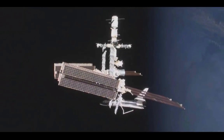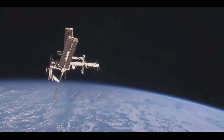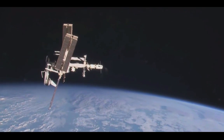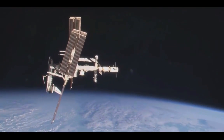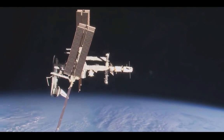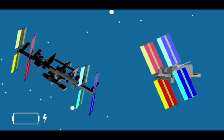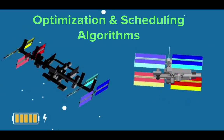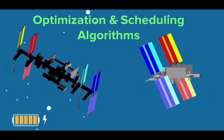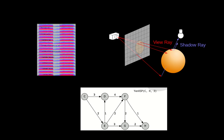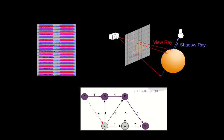How does NASA choose how to arrange the solar panels on the International Space Station, and when to rearrange them? With optimization and scheduling algorithms. Those algorithms are more complex than our everyday algorithms, like making a grilled cheese sandwich. But they boil down to the same thing: a set of steps to accomplish a task.